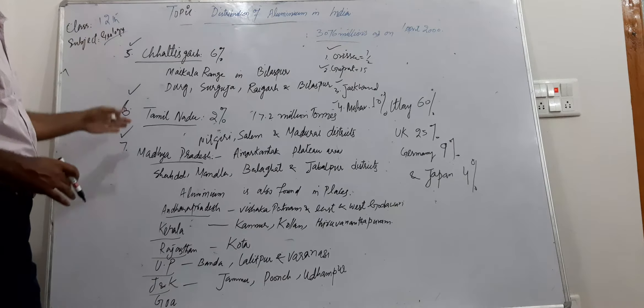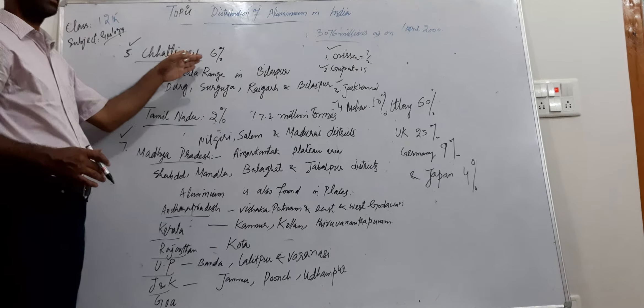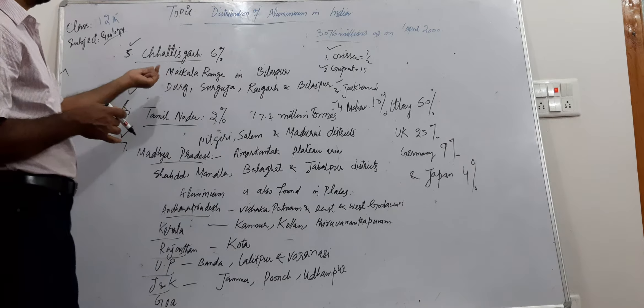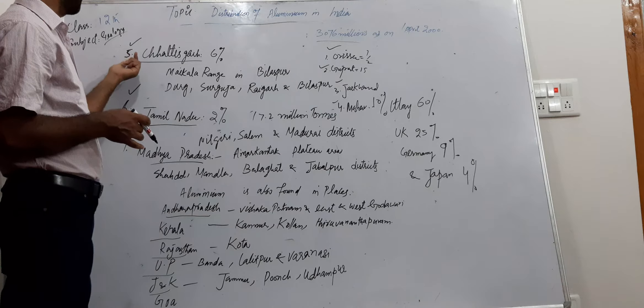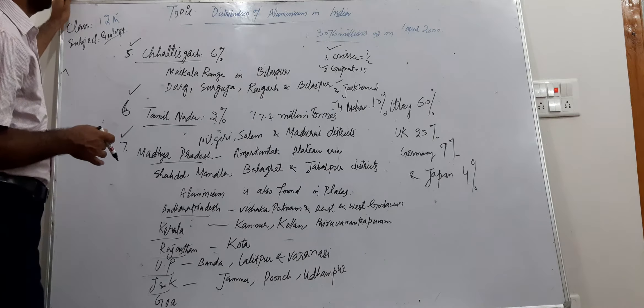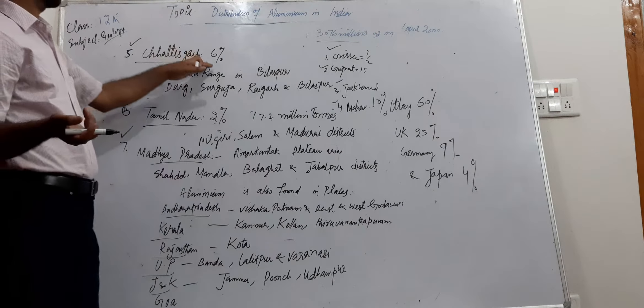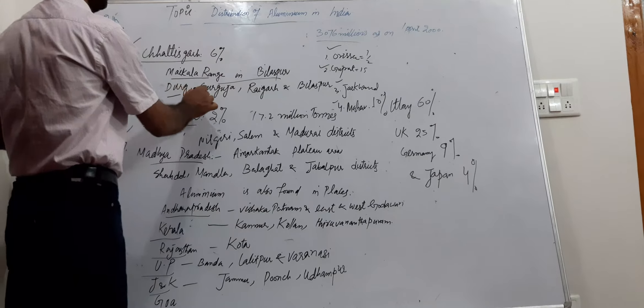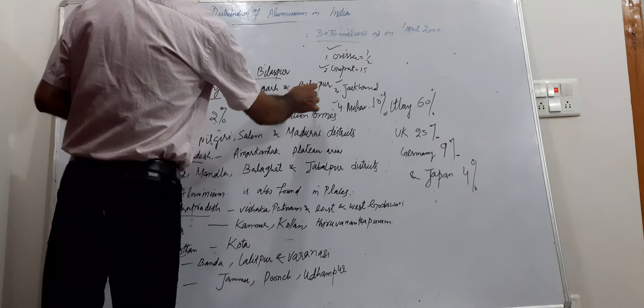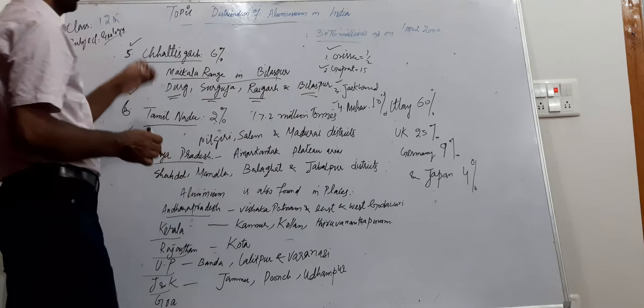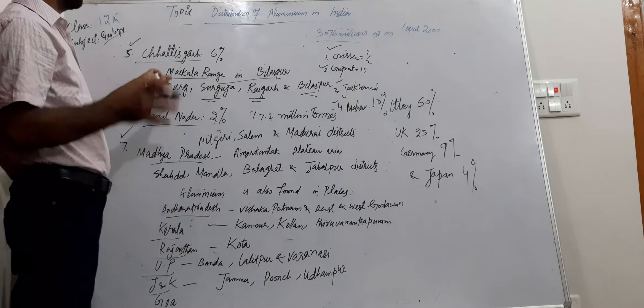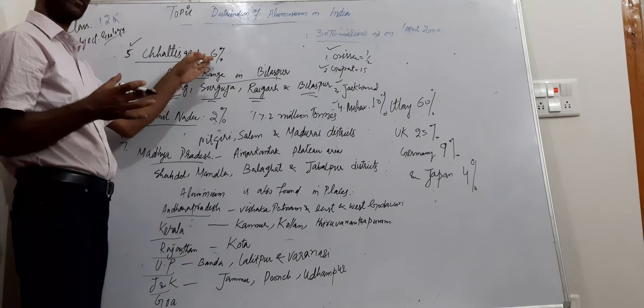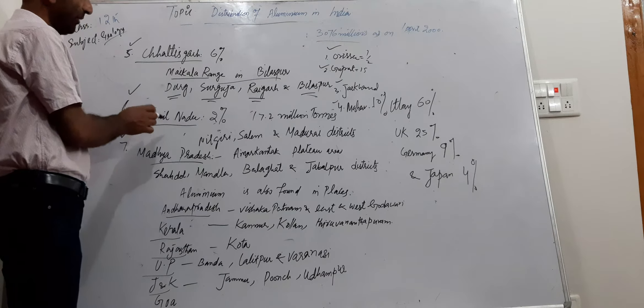Now in this class we will discuss Chhattisgarh which is at serial number five contributing 6 percent. The places are Bilaspur, Durg, Surguja, Raigarh, Bilaspur. These are the districts or locations where the extraction of bauxite is possible and provides us 6 percent of aluminum.